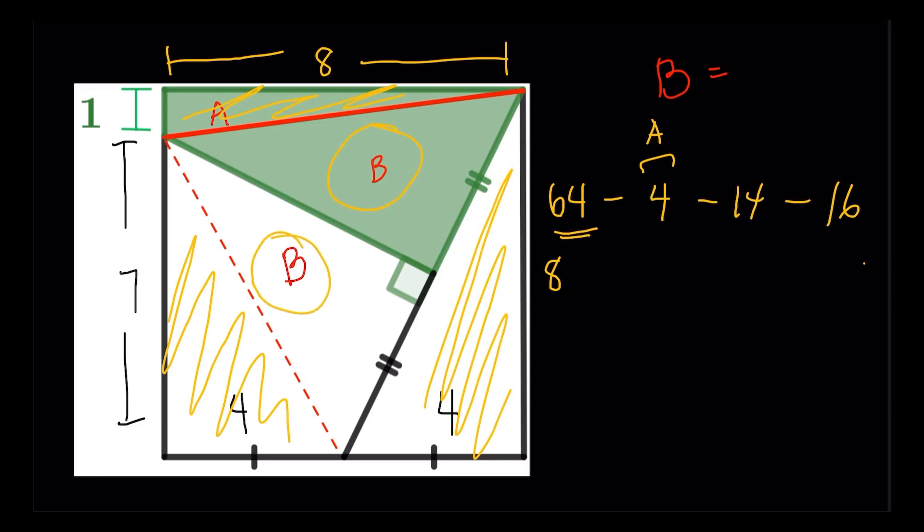Because the B here and the B here, they have the same area. So whatever this thing is, that should equal to B. So 64 minus four, minus 14, minus 16. This is going to give you 30. This gives you 30. So 30 equals two B. So obviously, divide both sides by two. B would be 15. And we're done.